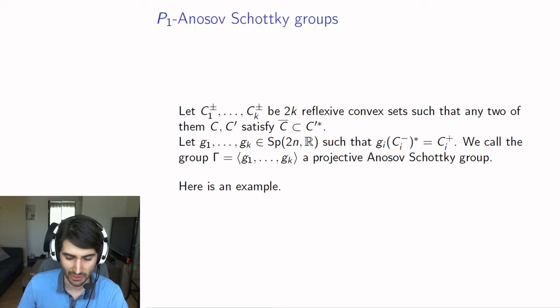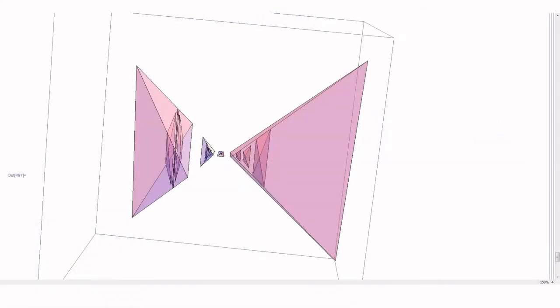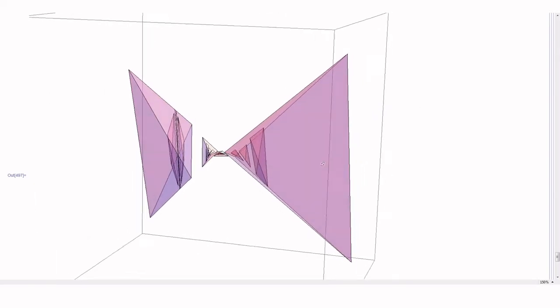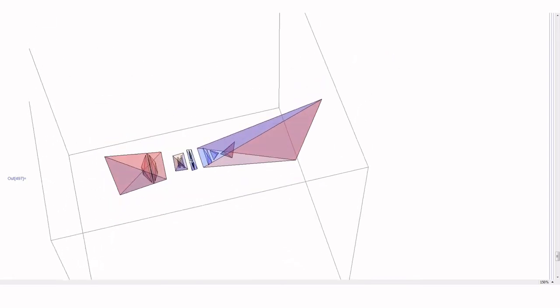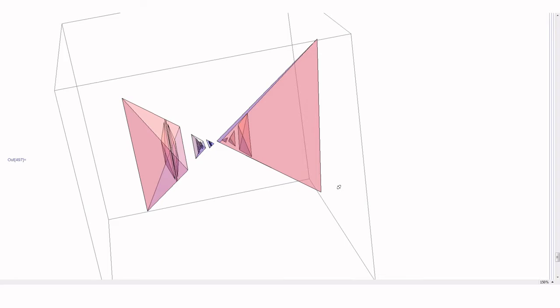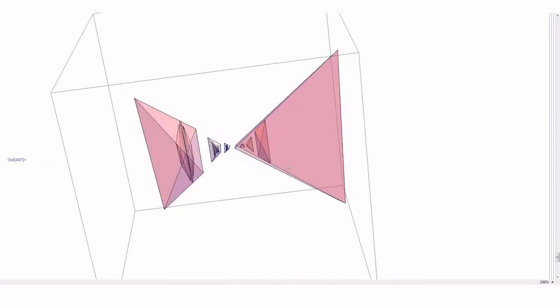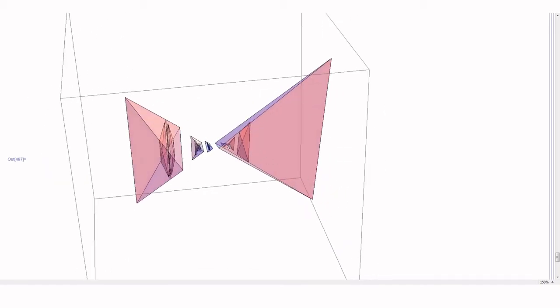Here's a picture example. What you see are 4 tetrahedra like in the previous picture I showed, and they are all contained in the dual of all the other ones. I'm talking about the 4 big ones here. Then we chose some elements of the symplectic group, which map the dual of this tetrahedron to this one, and another generator which maps the dual of this tetrahedron to this tetrahedron.